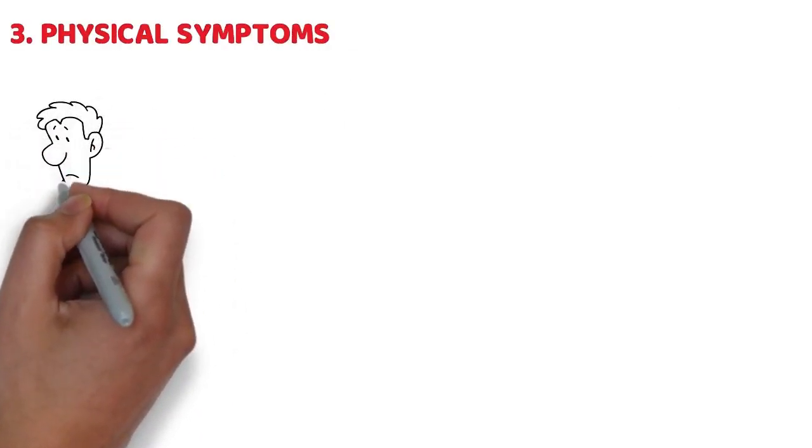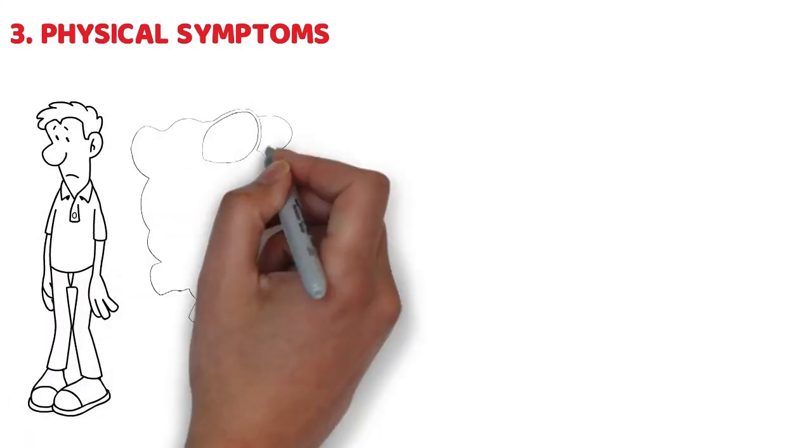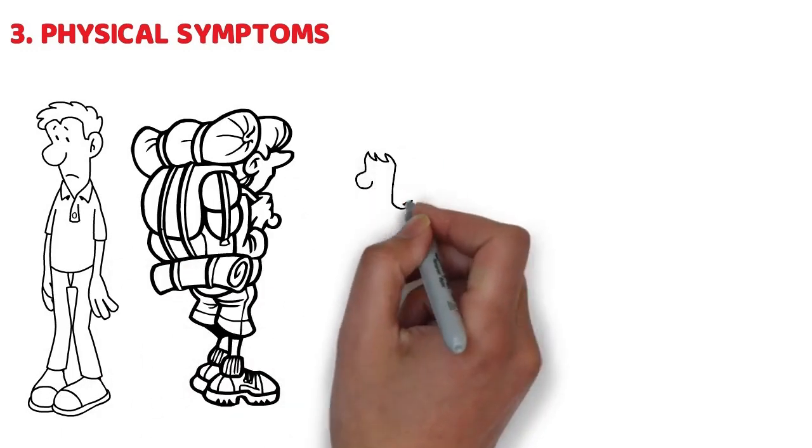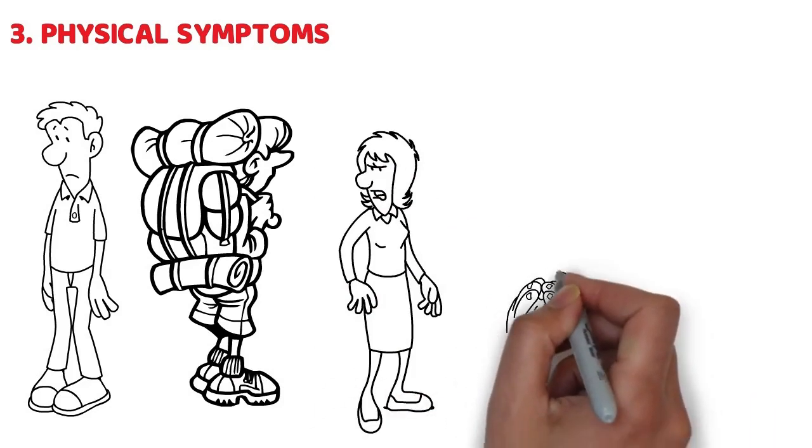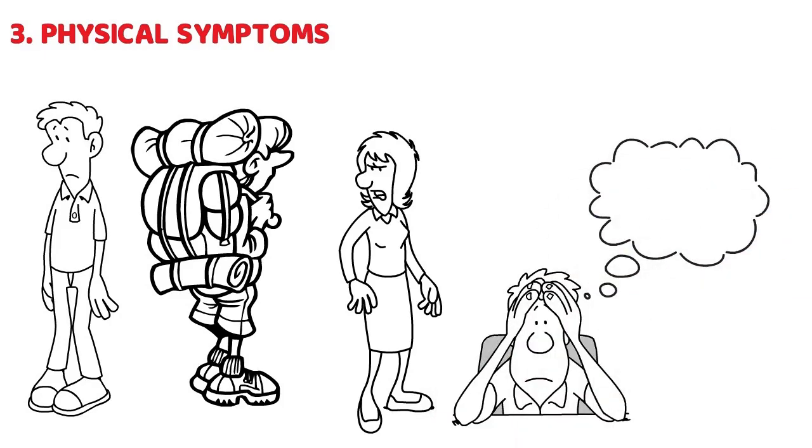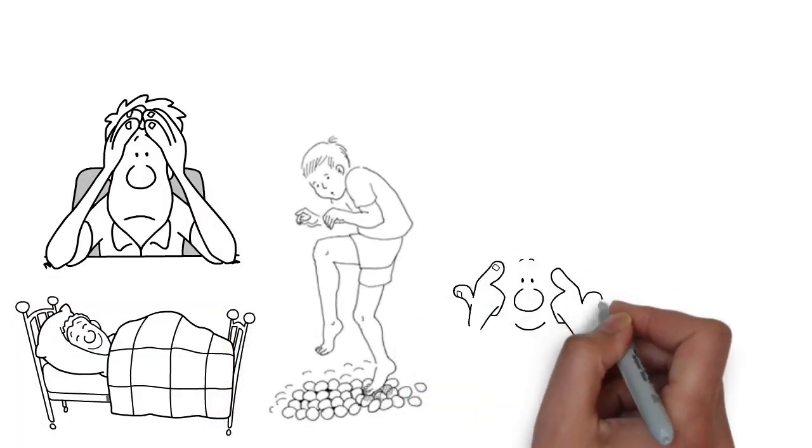Number 3: Physical Symptoms. Ever notice how stress can sneak up on you? Not just messing with your mood, but actually making you feel physically off. It's like carrying a backpack that's getting heavier by the day, only you can't take it off. When you're caught in a web of narcissistic abuse, this is your reality. Headaches, that knot in your stomach, or just feeling tired all the time. It's your body's way of saying, hey, something's not right here. This isn't about catching a bug or needing a good night's sleep. It's deeper.